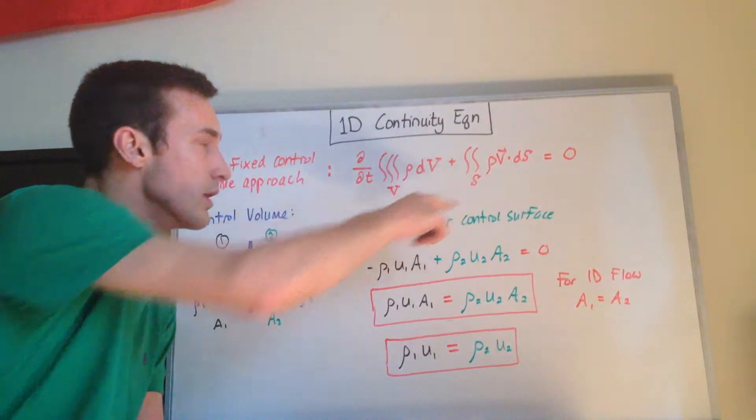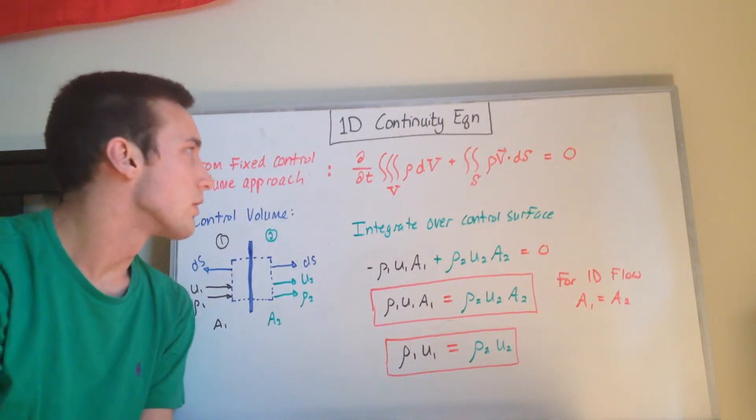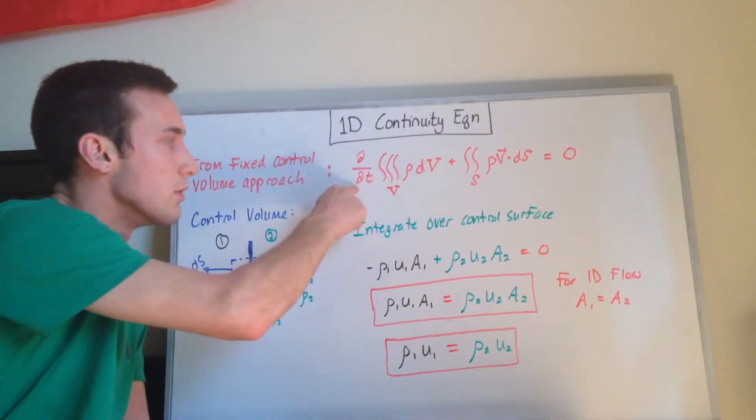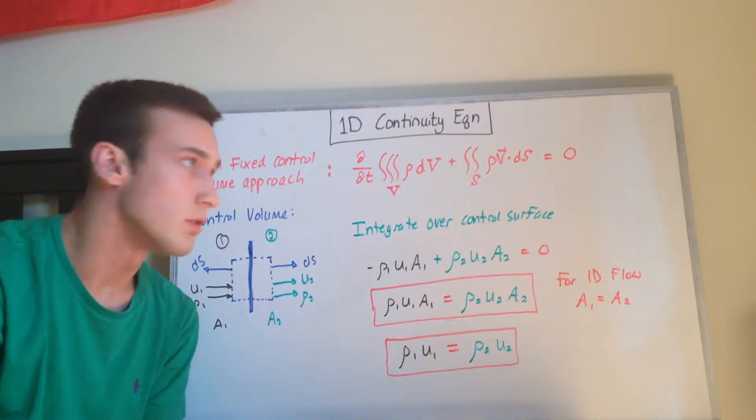So this is the continuity equation in integral form. The first term here is a time derivative term, so it's the time rate of change of the mass inside the control volume.